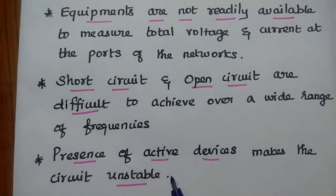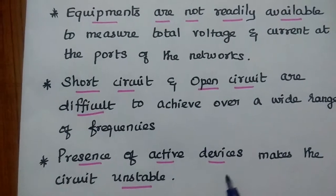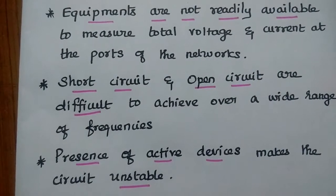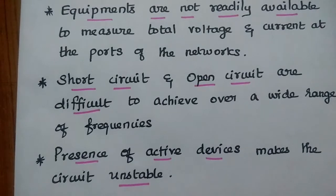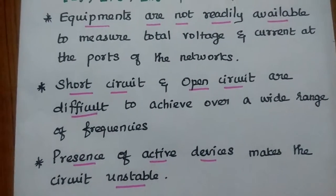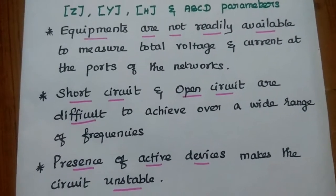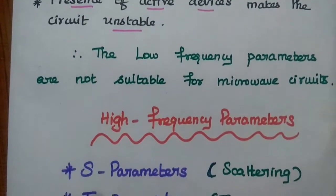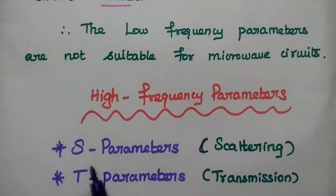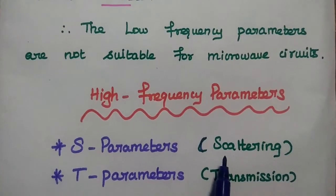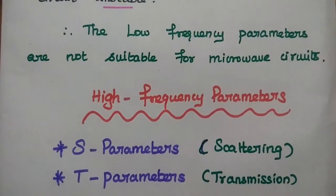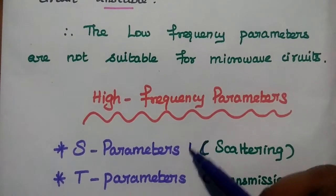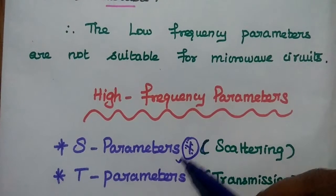Third, the presence of active devices makes the circuit unstable. Low frequency active devices like normal transistors (e.g., BC507 or BC107) or normal PN junction diodes cannot be used in high frequency networks. For these three reasons, we are not going to use low frequency parameters. Therefore, we need to move on to high frequency parameters, which are S-parameters (scattering parameters) and T-parameters.